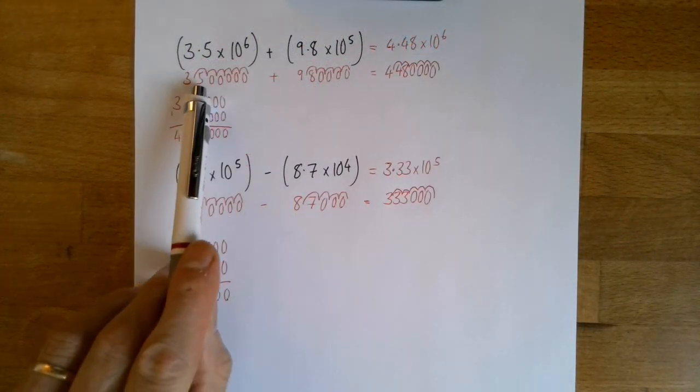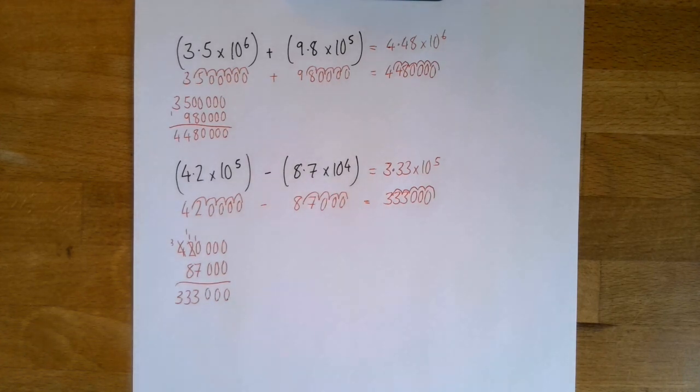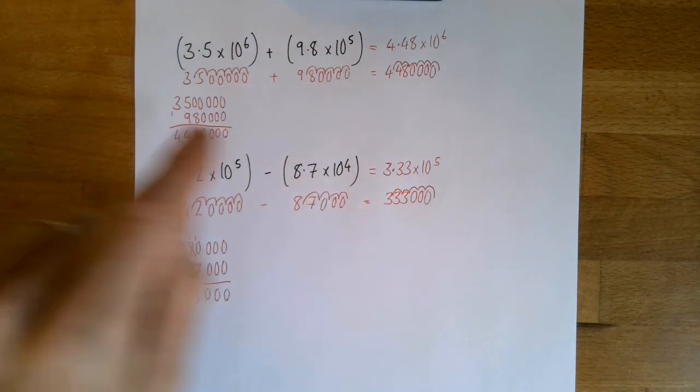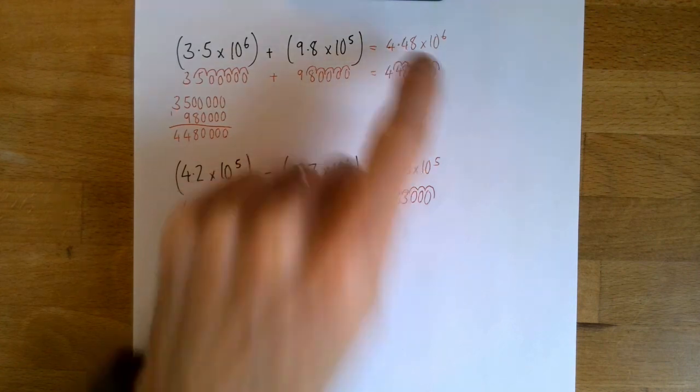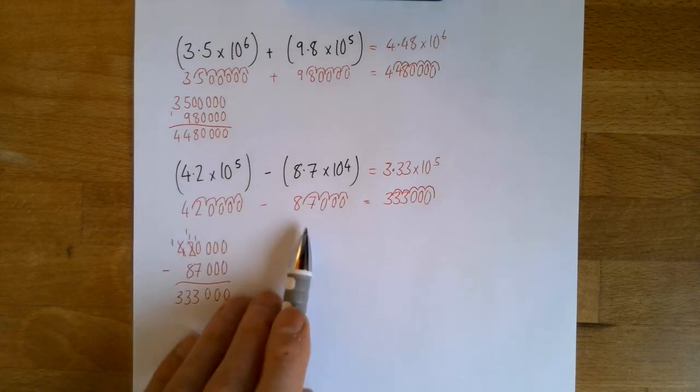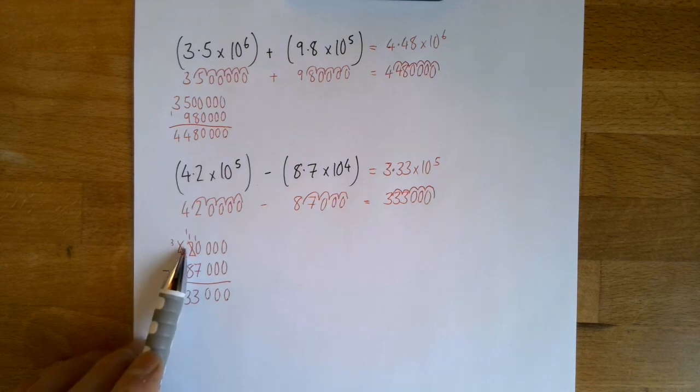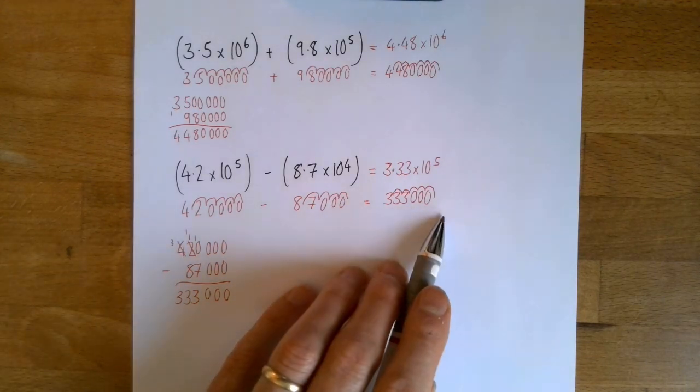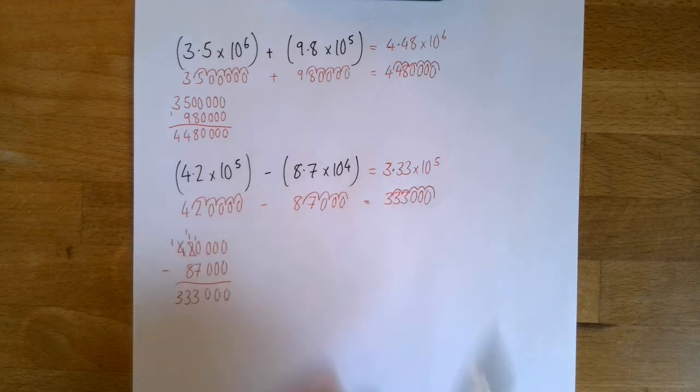Okay, so with the first one I changed it into an ordinary number, 3,500,000. This one was 980,000. I added them together and that gave me 4,480,000, which I changed back to standard form. Did you spot this was a subtract, a takeaway one? So I changed this one into 420,000. This one into 87,000 and then just did that to take away that. Some of you would have been able to do that in your head. Others would have done a column subtraction, which is a bit fiddly. It involves borrowing. But that gave me 333,000, which is 3.33 times 10 to the power of 5.